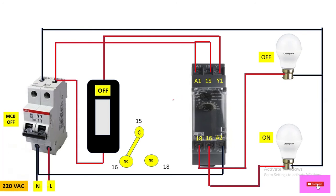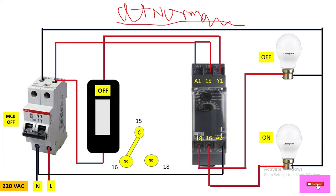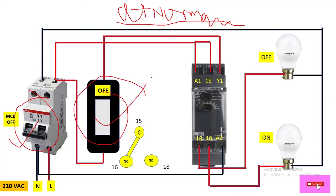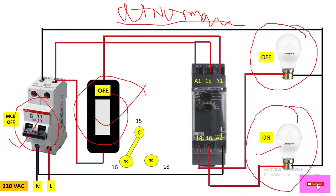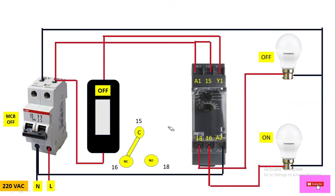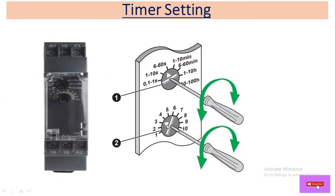At normal condition, before switching on the MCB or the switch, the first bulb is off and the second bulb is on, because terminal 16 is an NC contact — so it is already on at normal condition.